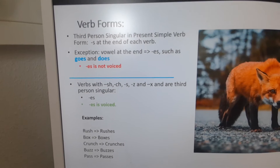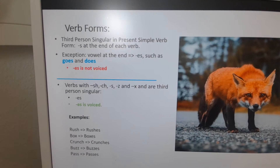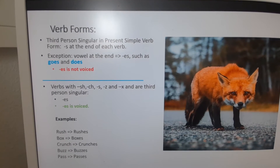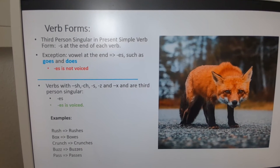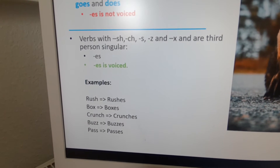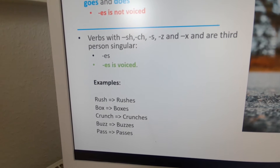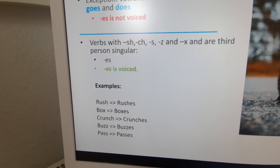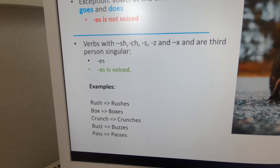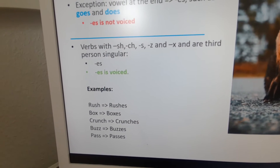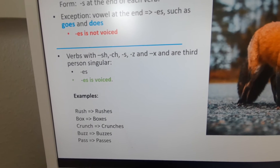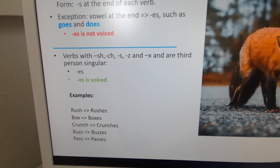It's a bit different if we look at verbs that have S-H, C-H, S, Z endings, as well as X. Those are considered voiced with E-S, basically following the same rules as plural nouns. A couple of examples: rush — the third person singular is rushes. Box — boxes. Think of boxing. Crunch — crunches. Buzz — buzzes, think of a bee. And lastly, pass — and passes. You've got two meanings there. You can pass a test, or you can pass cars on the highway, or pass a person by.